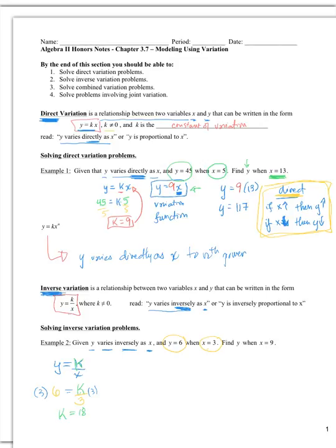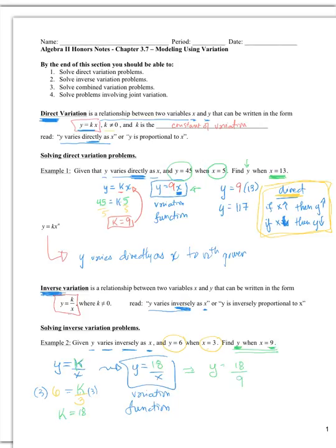We take the general form and substitute in our constant of variation to get the variation function for this relationship. We've also been given additional information — substituting in x equals 9 gives us y equals 2. So when x is 9, y is 2.